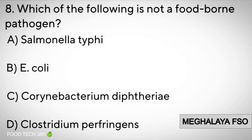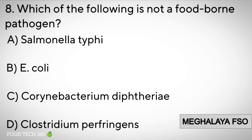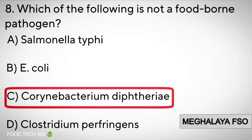Question number 8: Which of the following is not a foodborne pathogen? Options: A. Salmonella typhi. B. E. coli. C. Corynebacterium diphtheriae. D. Clostridium perfringens. Correct answer: C. Corynebacterium diphtheriae.